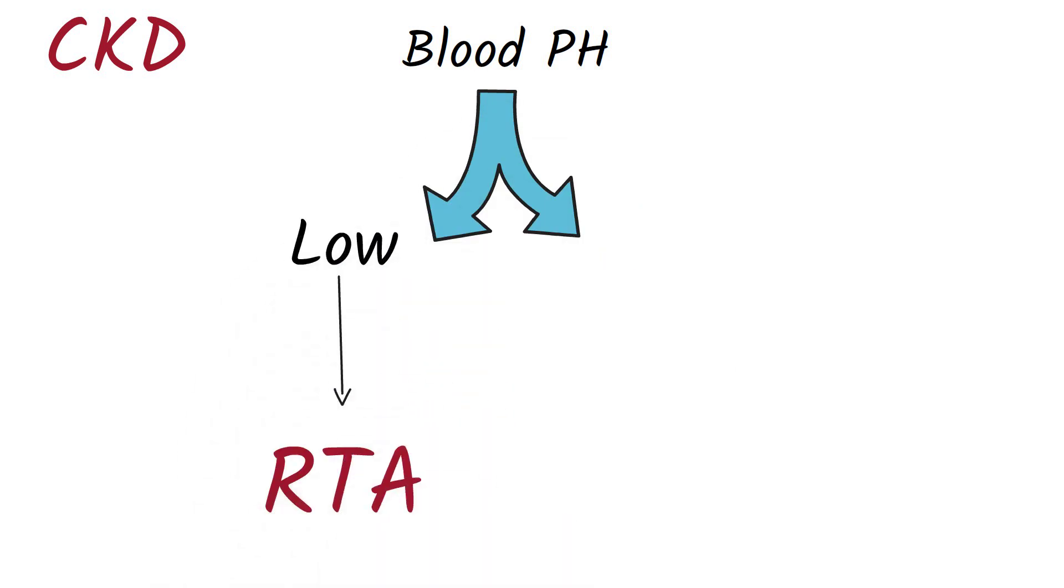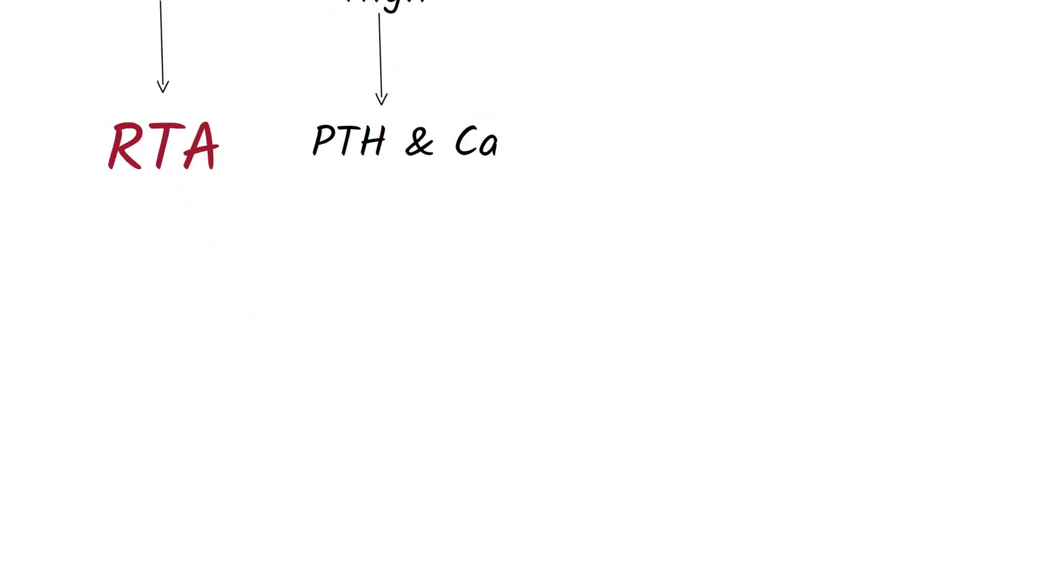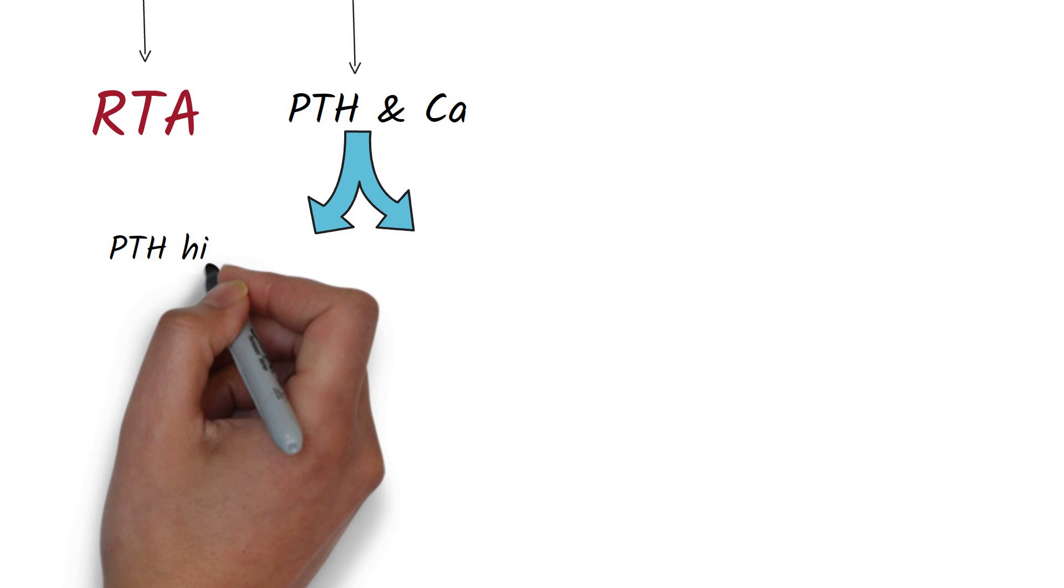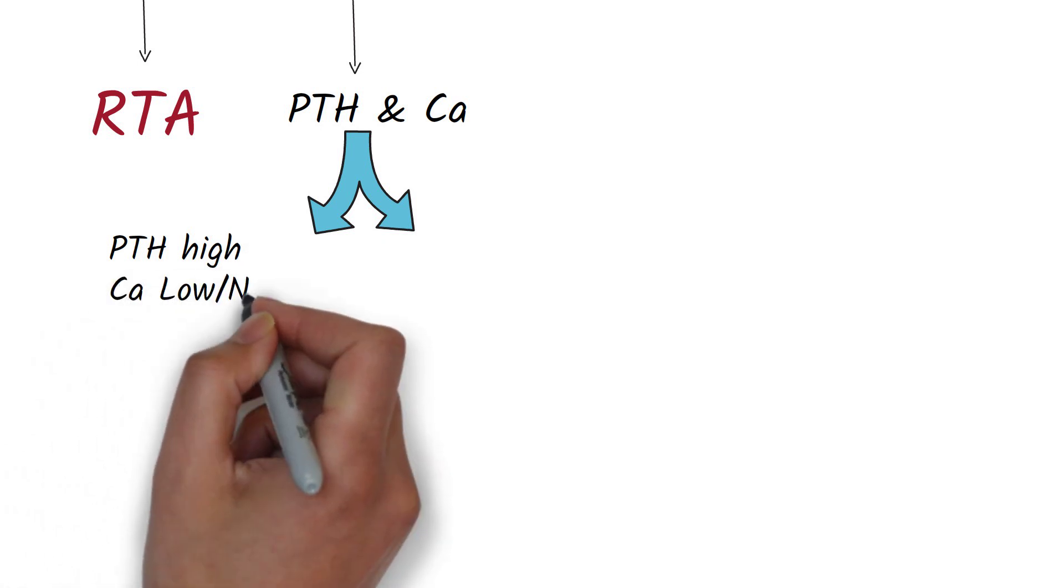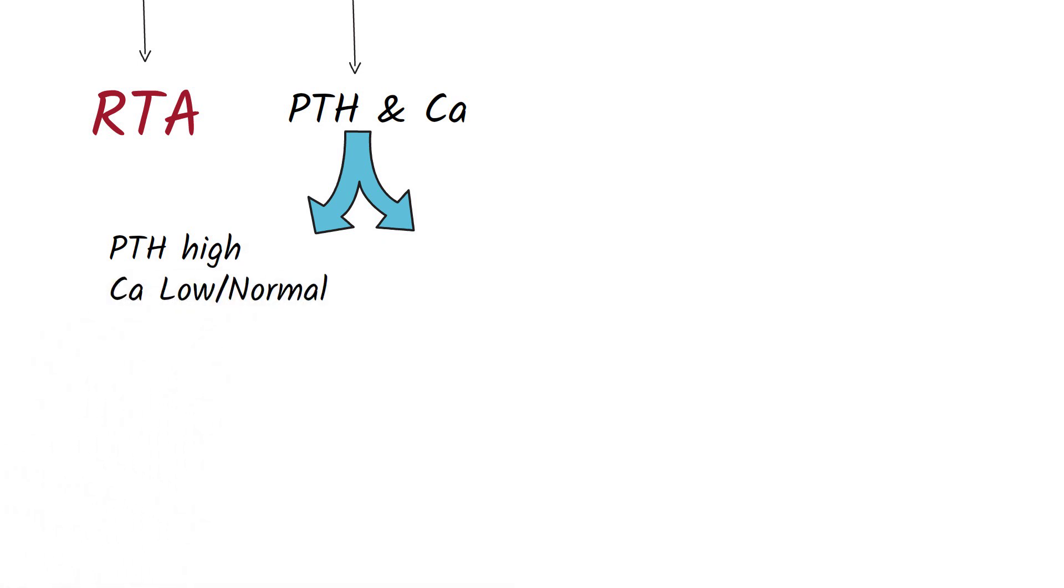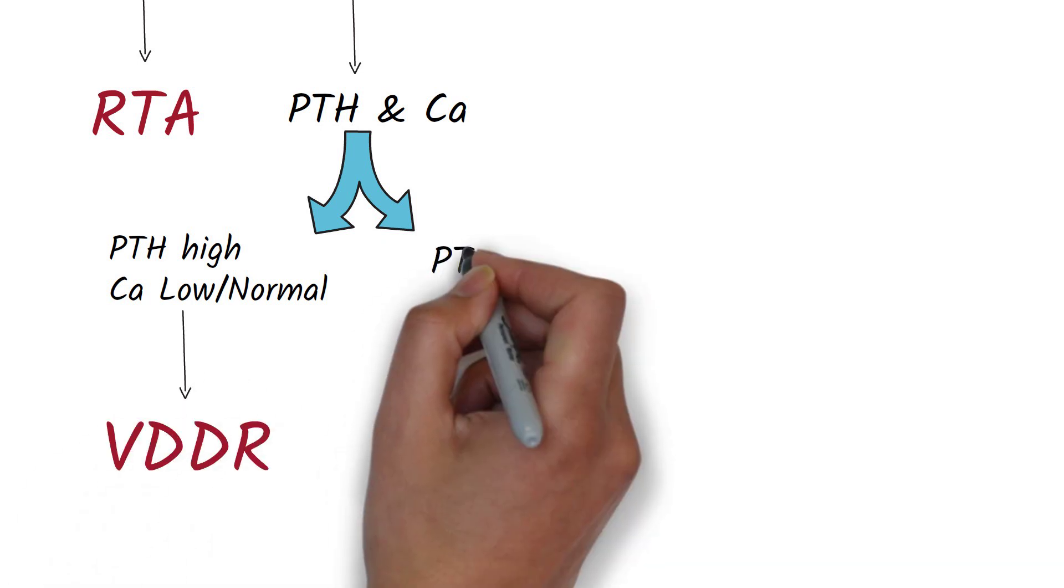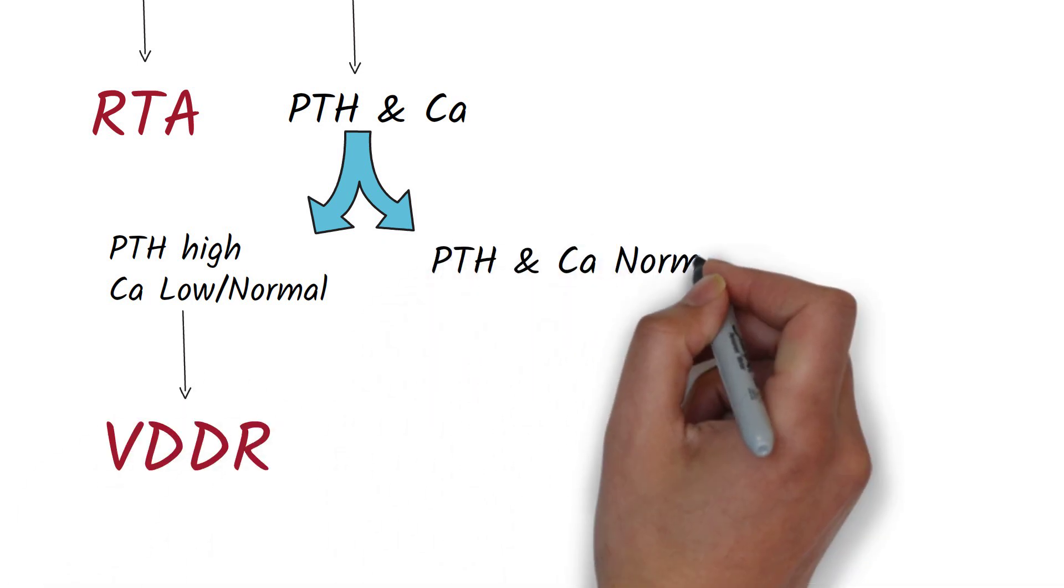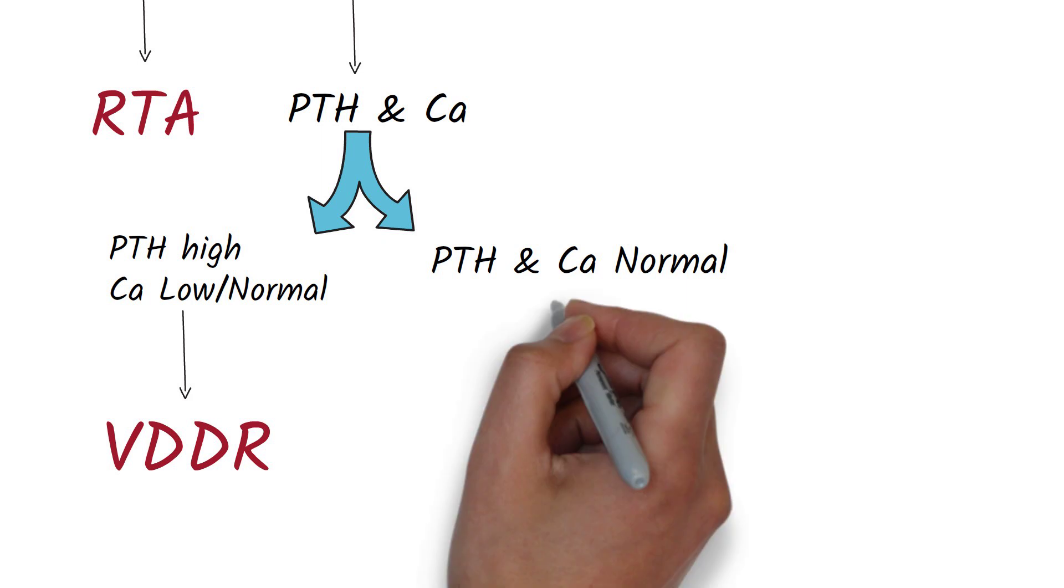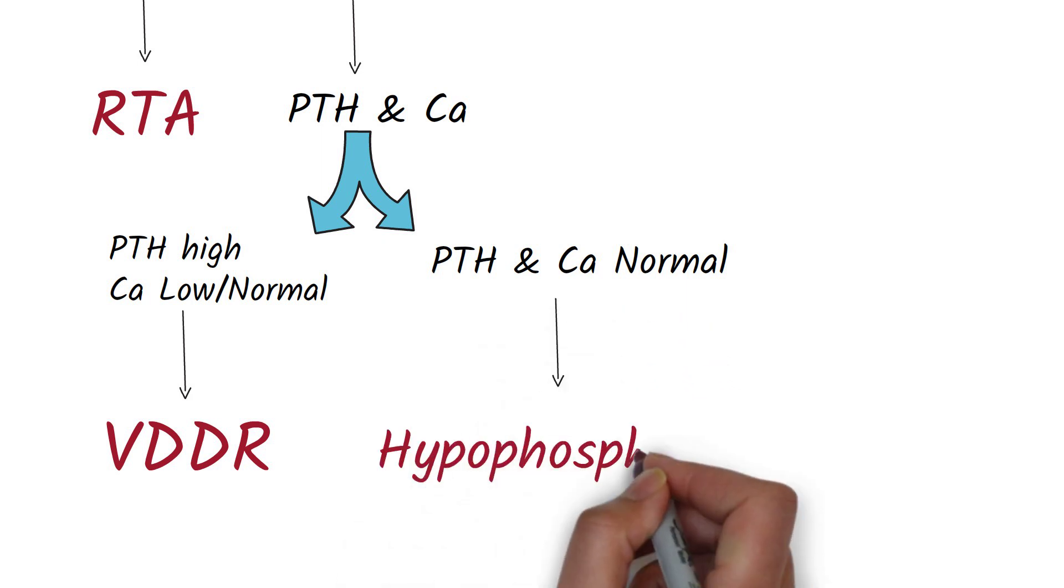If the pH is high, then we check the parathyroid hormone levels and the serum calcium levels. If parathyroid hormone levels are high but calcium levels are low or normal, then this is due to vitamin D dependent rickets. If there are normal levels of parathyroid hormone and calcium, then this is due to hyperphosphatemic rickets.